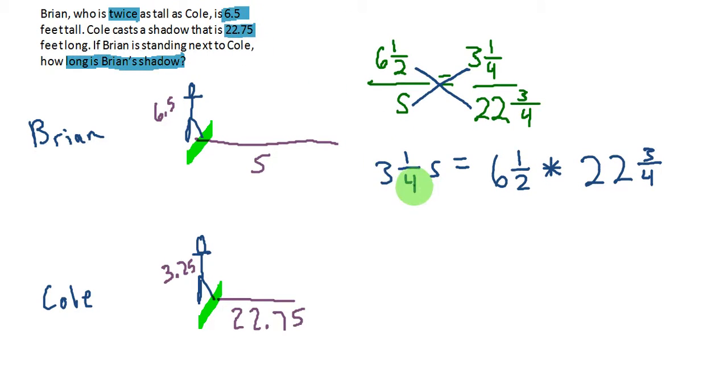So I know that 3 times 4, we get 12 here and 13 over 4. So 13 over 4 times S is equal to 6 times 2 is 12 plus 1 is 13. We have 13 over 2. And now we have 22 times 4 is 88 plus 3 will give us 91 over 4.